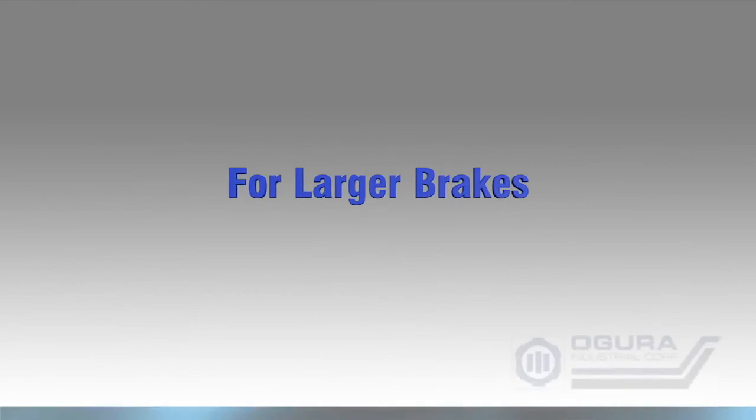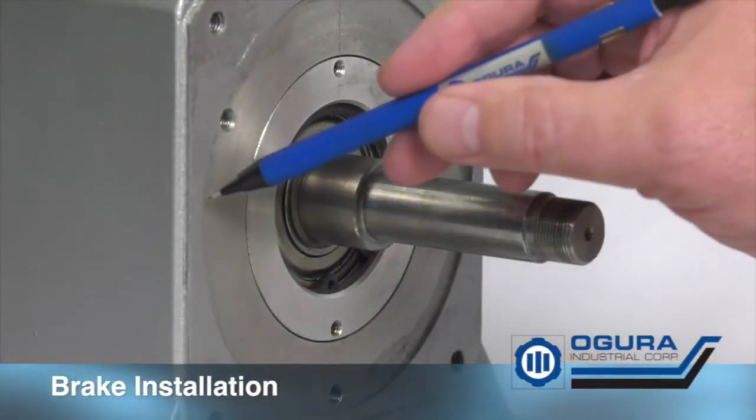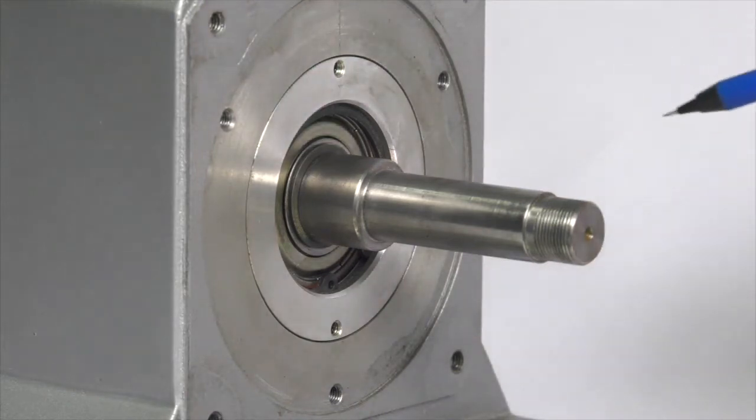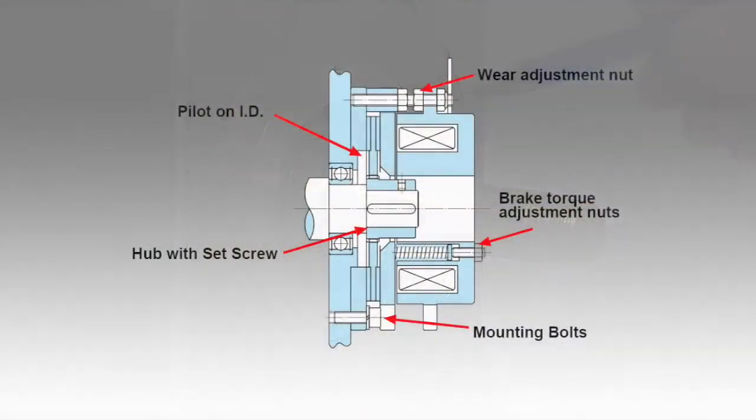For larger brakes, mount the brake body on the pilot. The pilot can pick up either the ID or the OD of the brake coil housing.